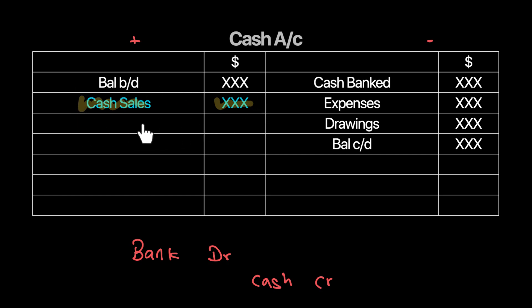Using the cash account and the sales ledger control account, we have now calculated our two missing figures: credit sales and cash sales.